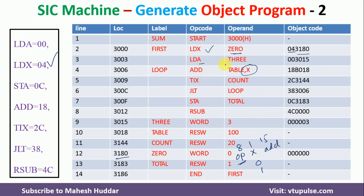Coming back to LDA, the LDA opcode value is 00, so I write that here. Again, it is direct addressing mode, so x equals 0. The operand 3 is present at address 3 — so the object code is written accordingly.